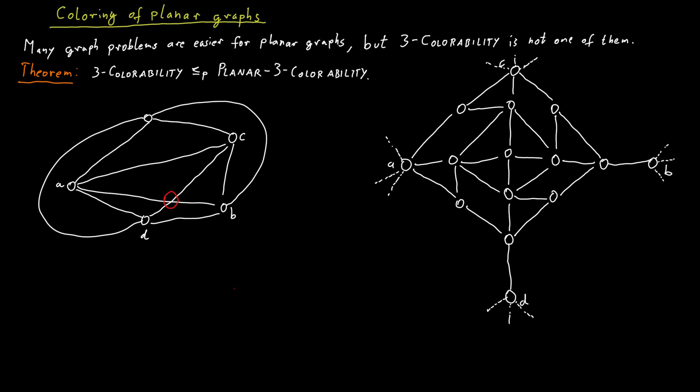So why is it the case that the old graph is 3-colourable if and only if the new graph is 3-colourable? In a way what this gadget does, it sort of teleports a color from one endpoint to the other. So we kind of teleport a color from the left vertex to the right vertex and we teleport a color from the top vertex to the bottom vertex or vice versa. What I mean by this is the following.